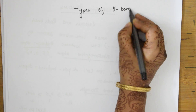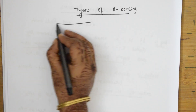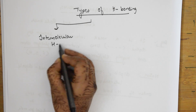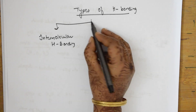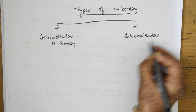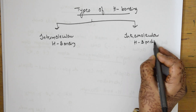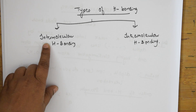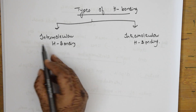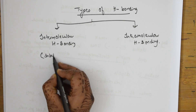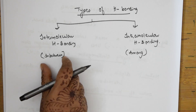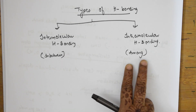Hydrogen bonding is of two types: intermolecular hydrogen bonding and intramolecular hydrogen bonding. As the names suggest, 'inter' means between two different molecules, and 'intra' means within or among the same molecule. So intermolecular is between two different molecules, and intramolecular is among the same molecule.